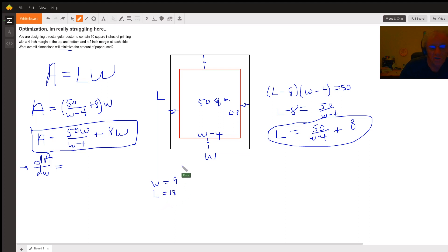And just to prove that that sort of works, I can find W minus 4 is 5 and L minus 8 is 10. 10 times 5 gives me that 50.